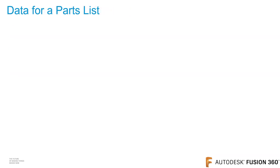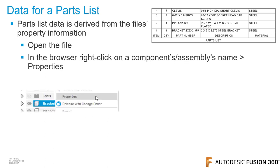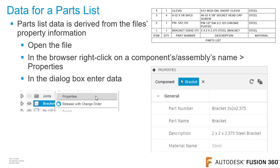In regards to a parts list, I want to discuss where this data comes from. The parts list data is derived from the file's property information. To edit this data, open up the desired file. In the browser, right-click either on the components or the assembly's name, and from the menu, click Properties. Now in the Properties dialog box, you can change the part number, the part name, and the description.